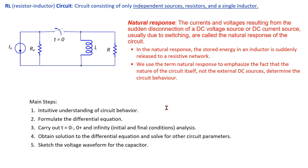In this video, we will look at the natural response of an RL circuit. An RL, or resistor-inductor circuit, is a circuit consisting of only independent sources, resistors, and a single inductor. The natural response is defined as the currents and voltages resulting from the sudden disconnection of a DC voltage or current source due to switching. We use the term natural response to emphasize that the nature of the circuit itself — that is, the inductor — determines the circuit behavior, not the external DC sources.